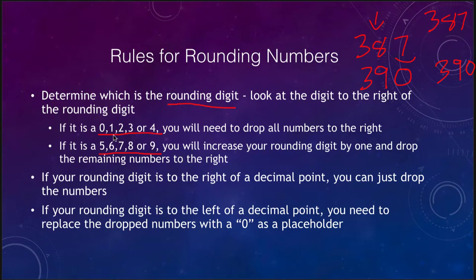We would increase the eight to a nine and add a placeholder zero, because we certainly don't want to change 387 to 39 — there is a big difference. Rounded to the tens place it would be 390. So if it's 4, 3, 2, 1, or 0, you drop the numbers and add a zero placeholder if needed. If it's 5, 6, 7, 8, or 9, you increase your rounding digit by one and drop the remaining numbers to the right.